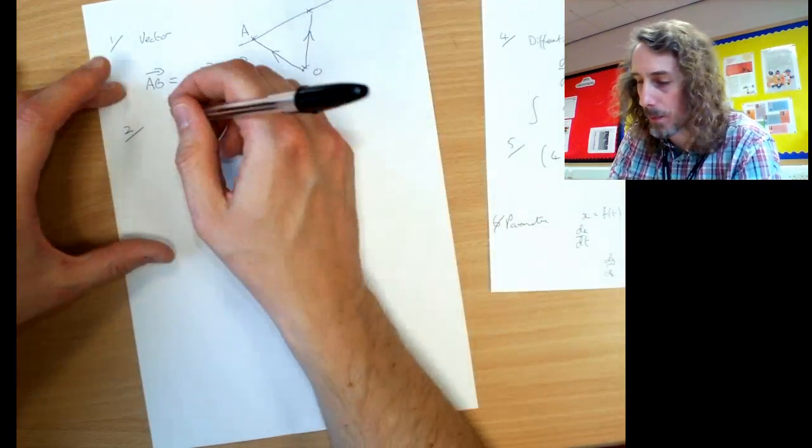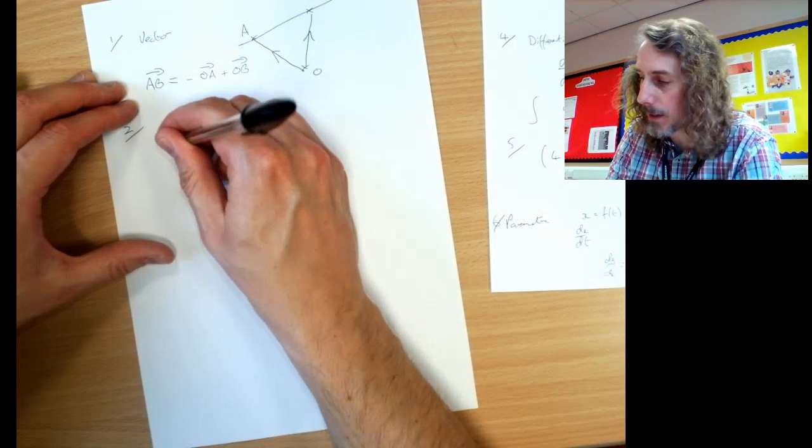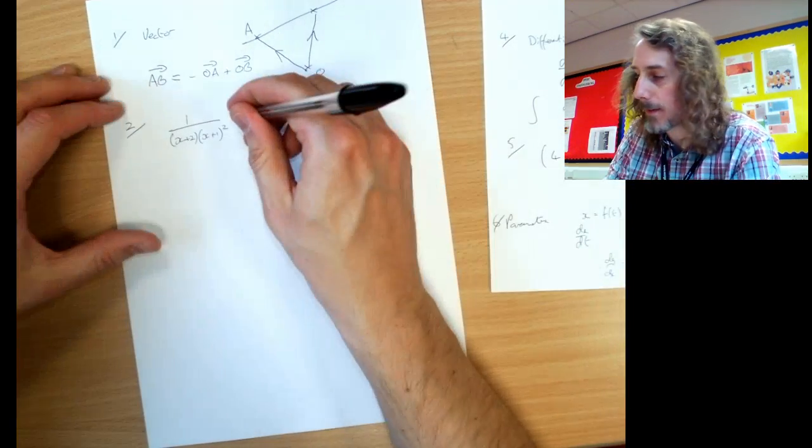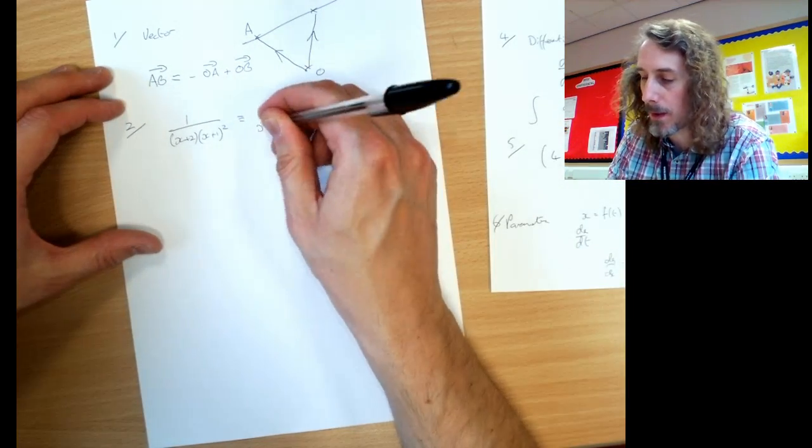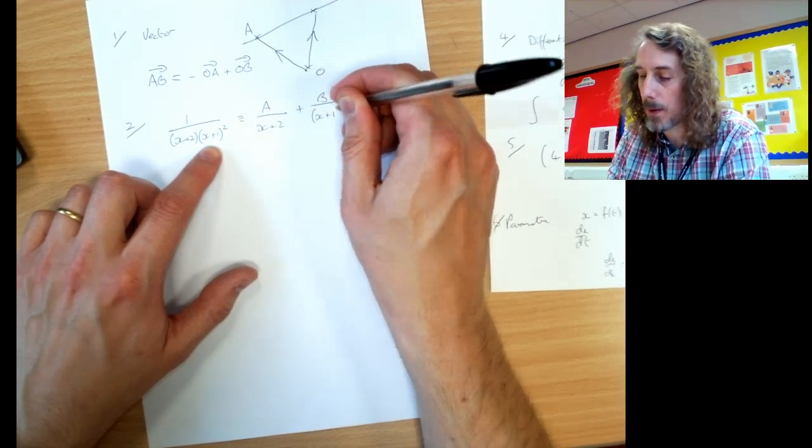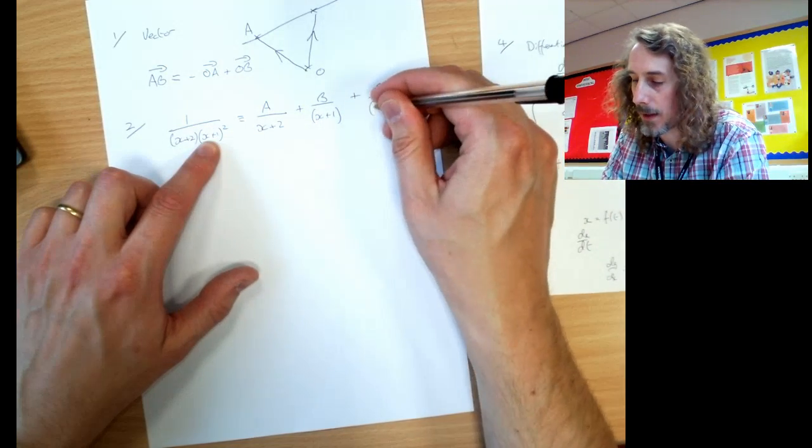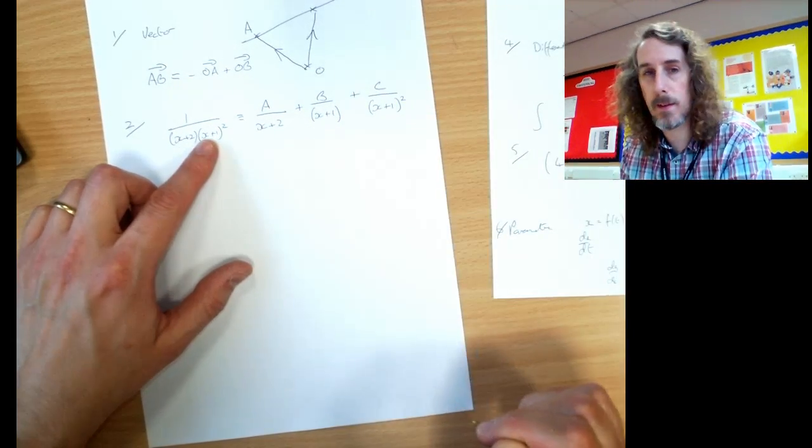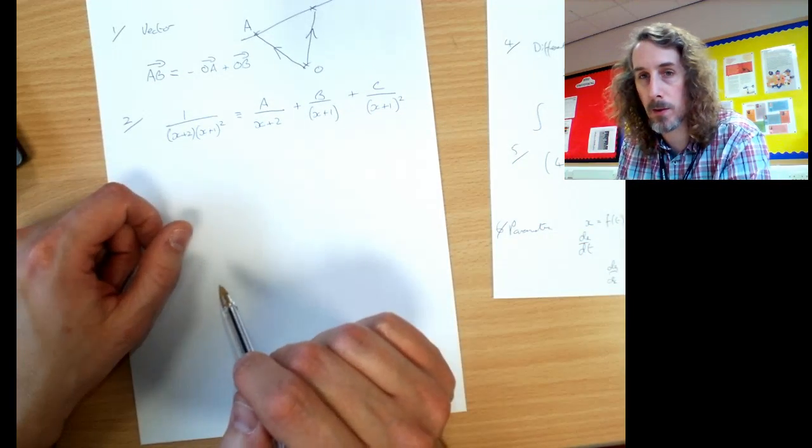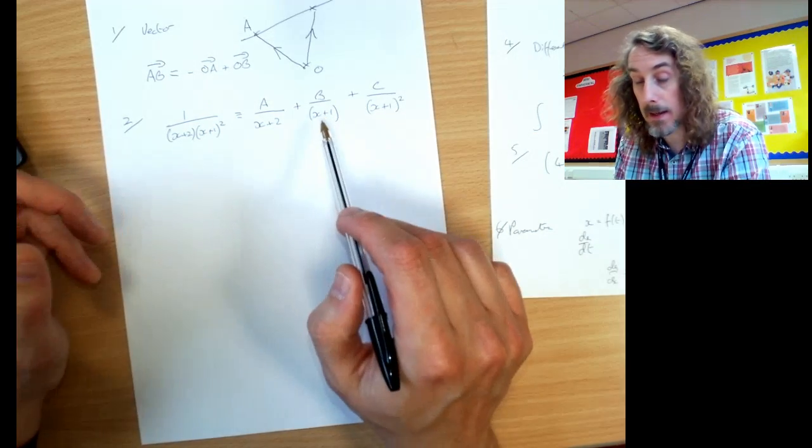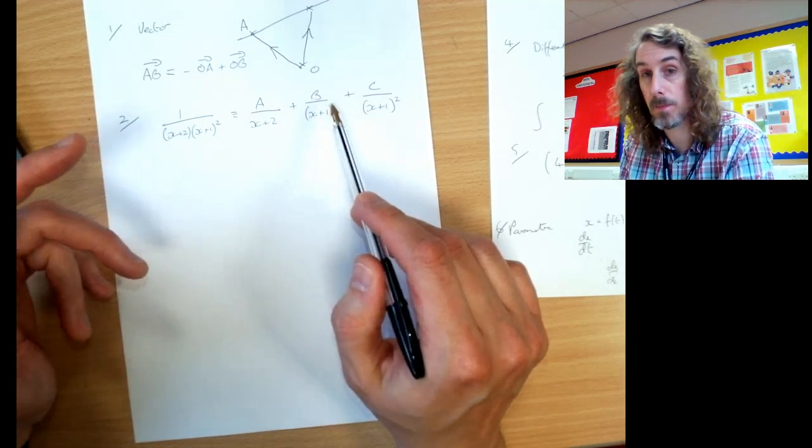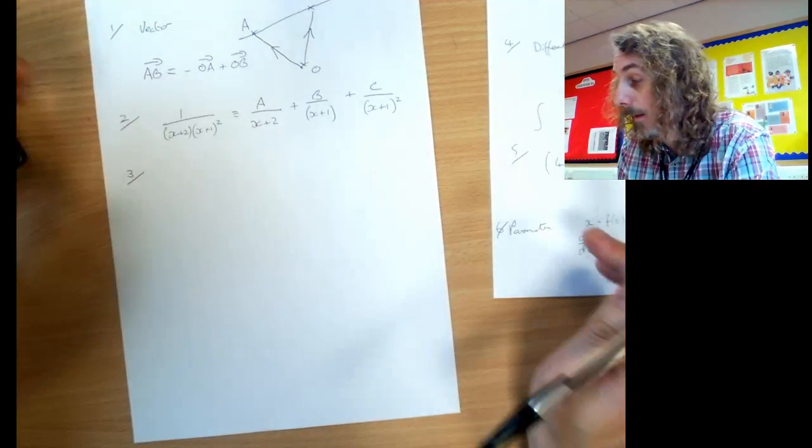Tip two. In partial fractions sometimes, you get those sneaky ones where one of the brackets on the bottom is squared. Remember the way you deal with that is you have A over X plus 2, plus B over X plus 1. But because it's squared, you also need C over X plus 1 squared. Remember you need three terms when you split it up into partial fractions. Be aware, B could potentially be zero. C can't and A can't, but B could be zero.